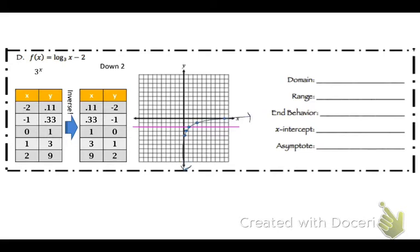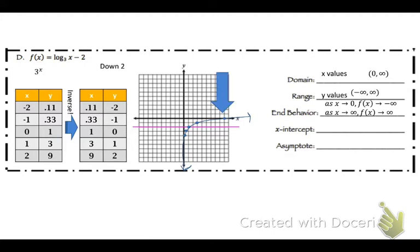Now we can graph that. Domain: 0 to infinity. Range: negative infinity to positive infinity. End behavior: as x goes to 0, f of x goes to negative infinity; as x goes to infinity, f of x goes to infinity. The x-intercept is (9, 0). The asymptote is x equals 0. Save those last two examples, remember to take the quiz — I'll see you guys tomorrow.